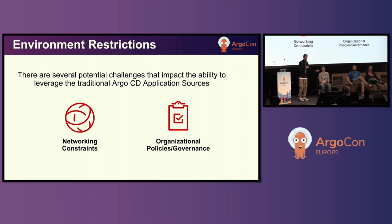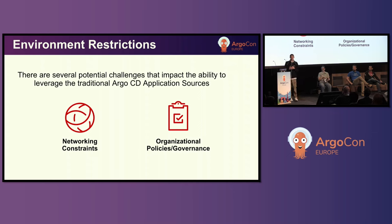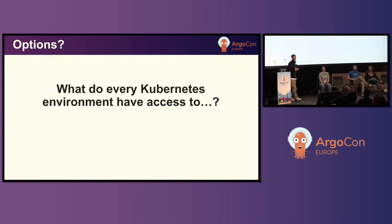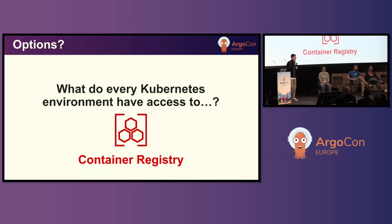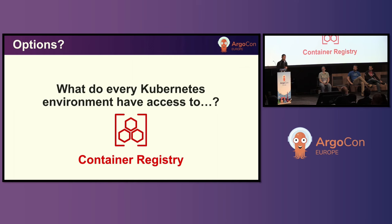I have many customers where they're not allowed to have a Git repository in their deployment or operational environment because of the separation of concerns between development and operations, or certain organizational policies that just can't have that type of environment, or they just can't deploy a Git server — we're talking edge environments. However, what does every Kubernetes environment have access to? A container registry.